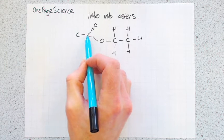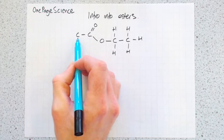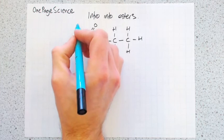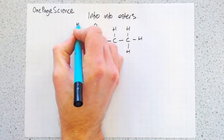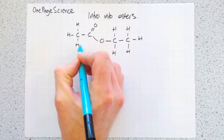This carbon has four bonds, one, two, three, four, so it doesn't need anything else. And then this carbon over here still needs three hydrogens.